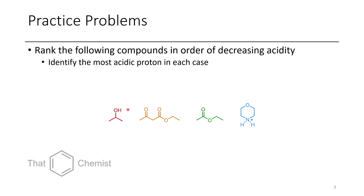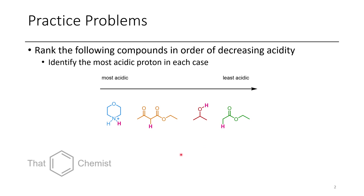We also have an OH. OHs are generally quite acidic — it just depends on what's connected to them, but alcohols tend to have a pKa around 16. And finally we have this ester, which is not that acidic relative to everything else here. So in order of decreasing acidity, we start with the protonated amine, which is called a morpholine, then the beta-ketoester, followed by isopropanol, and finally ethyl acetate.